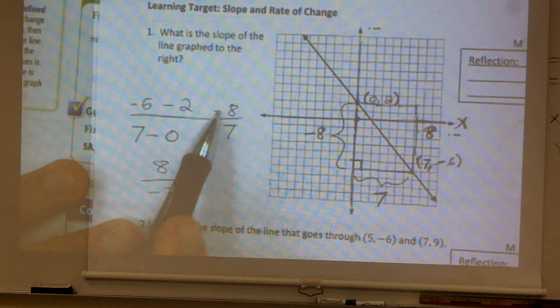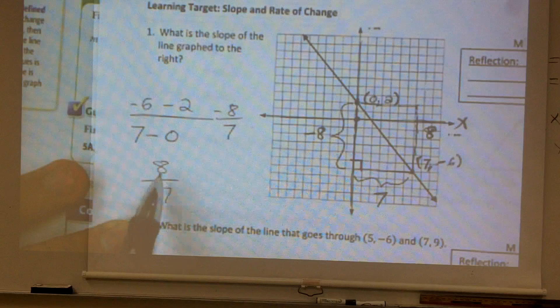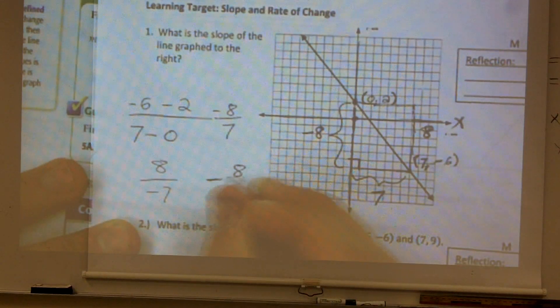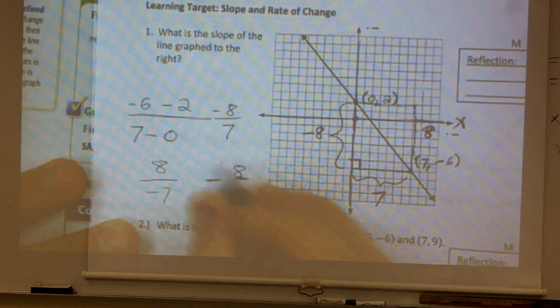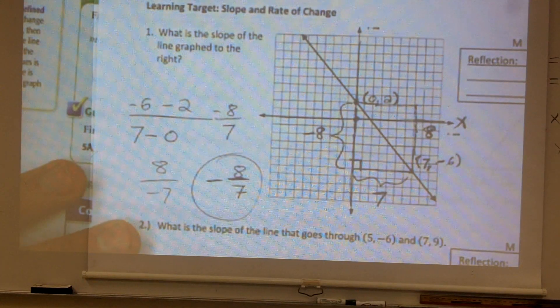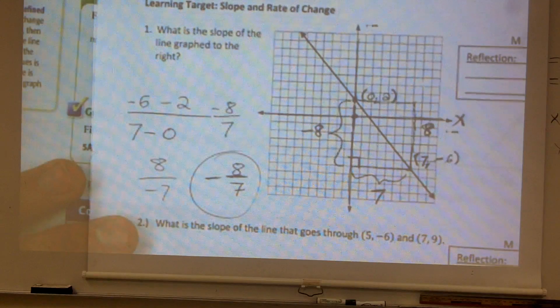Now here comes the question. Is negative 8 divided by 7 the same thing as 8 divided by negative 7? And yes. They're both going to give you a negative 8 sevenths. So that is my slope for that line. Okay? That's it.